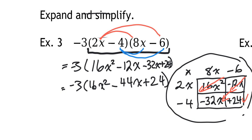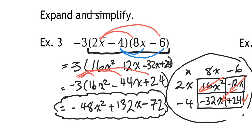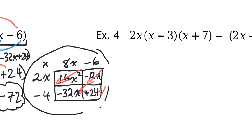Now we take everything outside — the negative 3 — and distribute it into each term of our simplified bracket: negative 3 times 16x squared is negative 48x squared, negative 3 times negative 44x is plus 132x, and negative 3 times positive 24 is minus 72. Our final answer is negative 48x squared plus 132x minus 72.